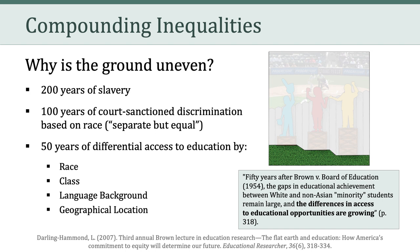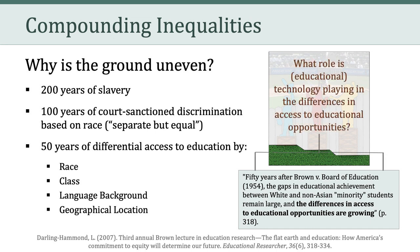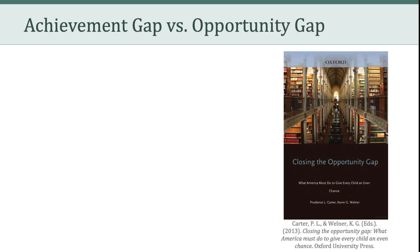And here's the big point: the differences in access to educational opportunities are growing — not shrinking, they're growing. A question I have for all of you is, what role do you think technology has played in those growing differences in access to educational opportunity? Now I want to talk about Carter and Wellner's book, Closing the Opportunity Gap. Importantly, they introduce a couple of key concepts, and one of those concepts is the difference between the achievement gap and the opportunity gap. So let's delve into that distinction.